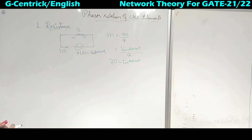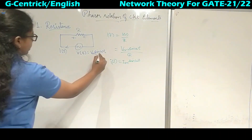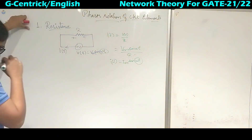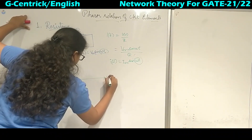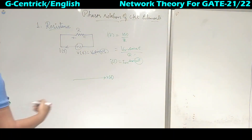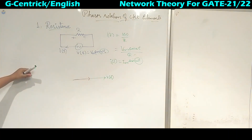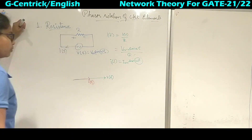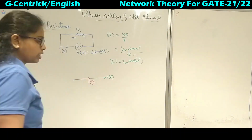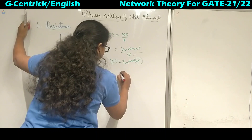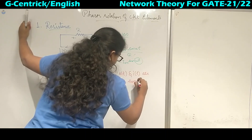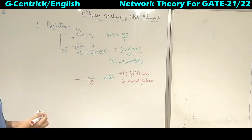Now if we draw the phasor diagram of R with V(t) and I(t): both are having the same frequency, and in R there is no phase shift. So we take voltage as the reference. Since both current and voltage have the same frequency and same phase direction, we say that current and voltage are in phase. The magnitudes will be different, but they are in the same phase.